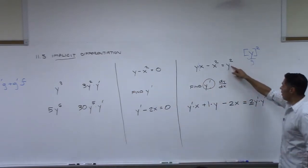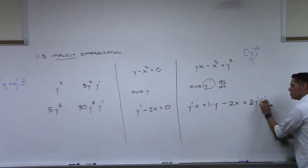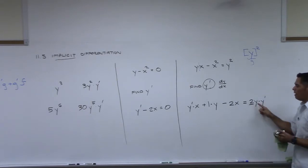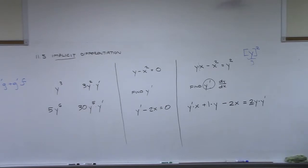So the derivative of y squared, 2y times y prime. It makes sense, but it's going to be hard to remember when to do that.